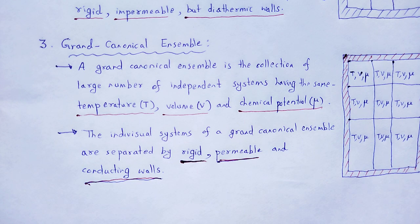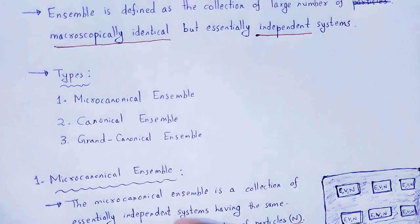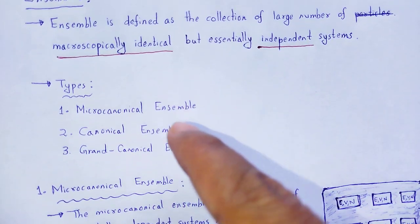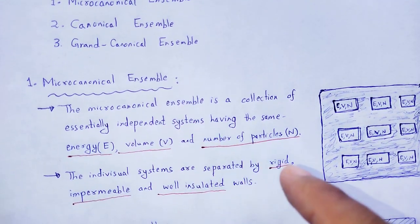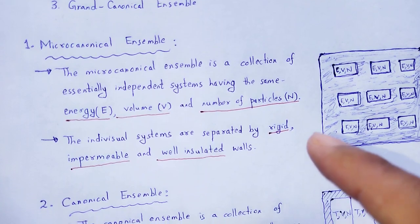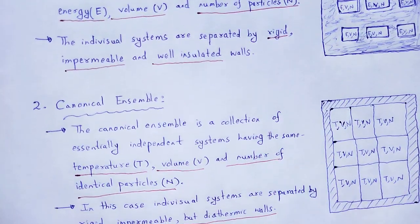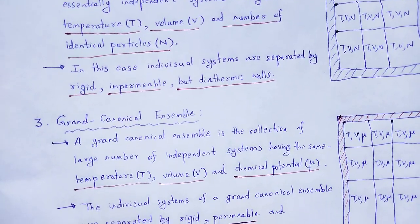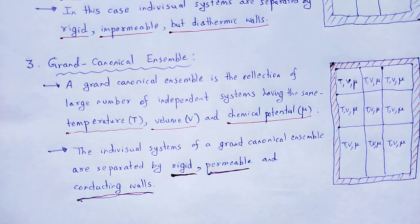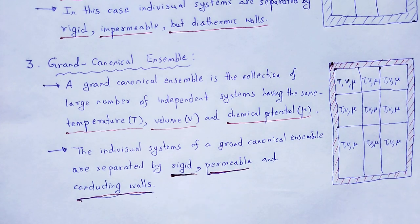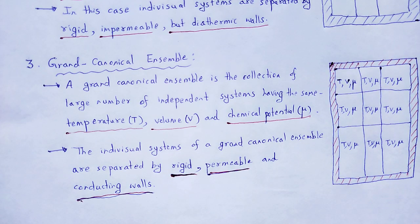So, with the help of this video lecture we understand the concept of ensembles and its types: micro-canonical ensemble, canonical ensemble, and grand canonical ensemble, with their properties. With this useful and informative session, let me wind up. Thank you.